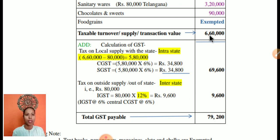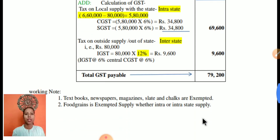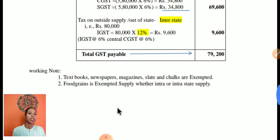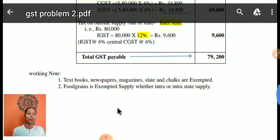In the working note, you must mention that textbooks, newspapers, magazines, chalk sticks, and other such items are exempted from tax, and food grain is an exempted supply whether intra-state or inter-state. Mention the working note very clearly to analyze the problem.